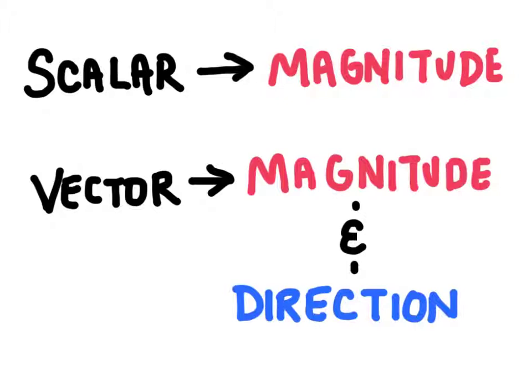Scalars are a measurement that include only a magnitude, no direction, whereas vectors have a magnitude and a direction.